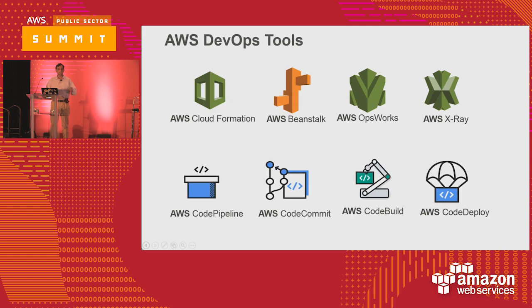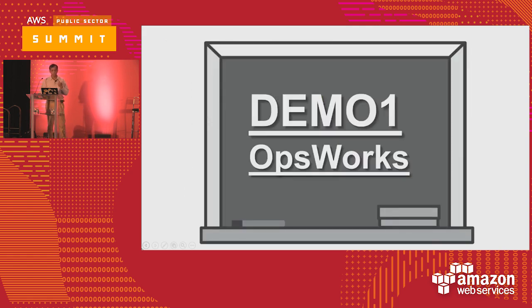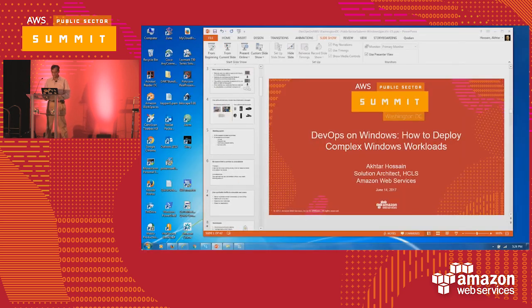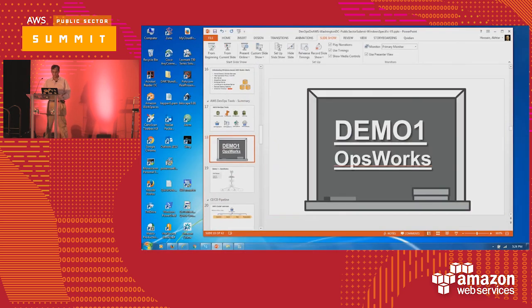The bottom row is the CodeStar services I was talking about: CodePipeline, CodeCommit, CodeBuild, and AWS CodeDeploy. Let's look at some very simple examples — let's see how to show something on OpsWorks.